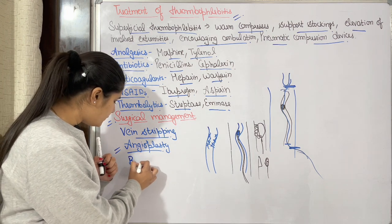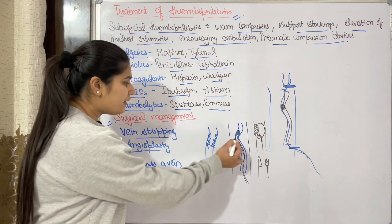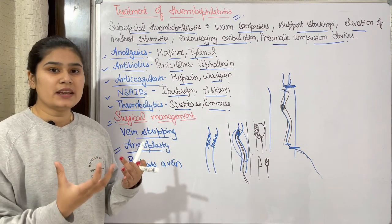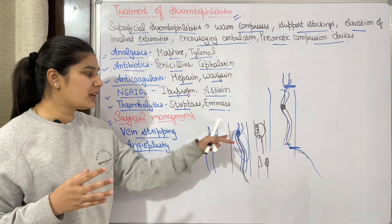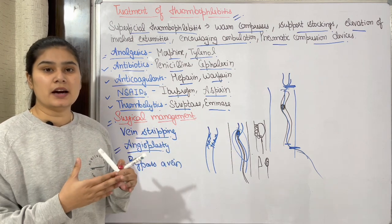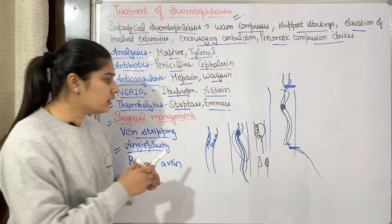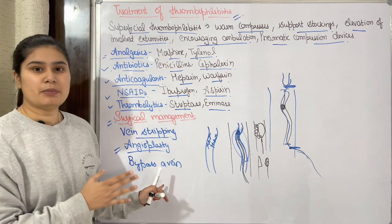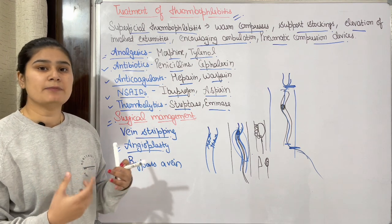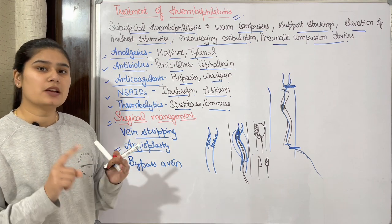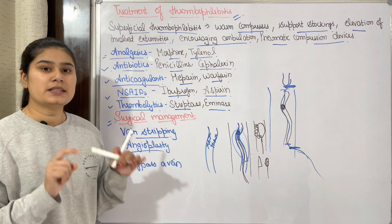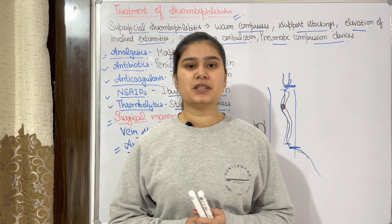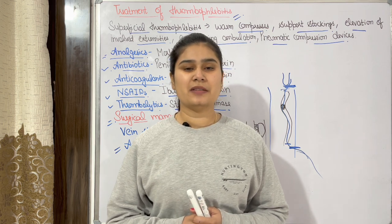In surgical management, we can also perform bypass surgery. If a vein is removed and blood flow is disrupted, we take a graft — a vein from another place — and attach it to create a bypass for proper circulation. Many other surgeries can also be performed for varicose veins, which I have explained in detail in a previous video. I will provide a description link so you can check it. If you understood this video, please like, subscribe, and share my channel. Also do support women empowerment. Thank you for watching.